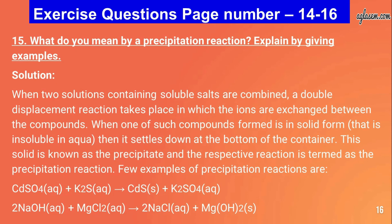Question number fifteen: what do you mean by a precipitation reaction? When two solutions containing soluble salts are combined, a double displacement reaction takes place in which ions are exchanged. When one of the compounds formed is in solid form (insoluble in water), it settles at the bottom of the container. This solid is known as the precipitate and the reaction is called a precipitation reaction. Examples: CdSO₄(aq) + K₂S(aq) → CdS(s) + K₂SO₄(aq); 2NaOH(aq) + MgCl₂(aq) → 2NaCl(aq) + Mg(OH)₂(s).